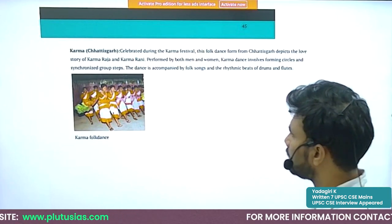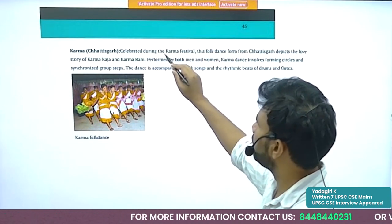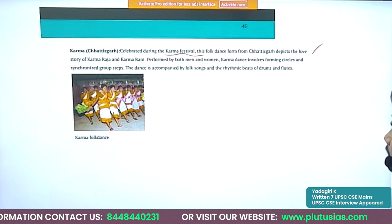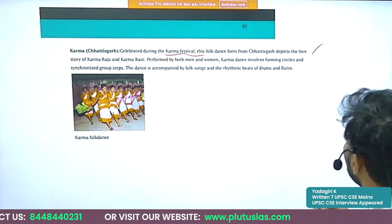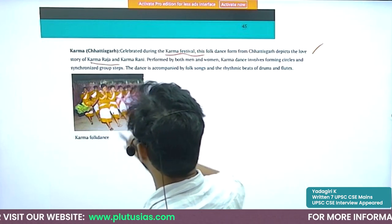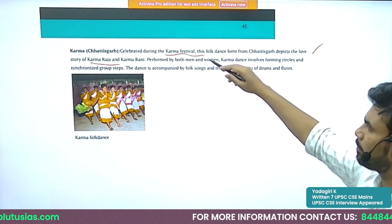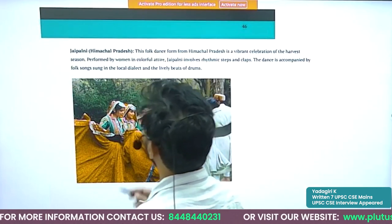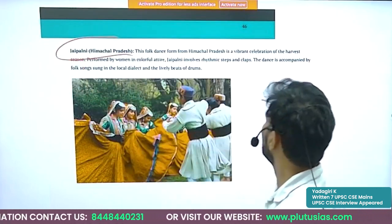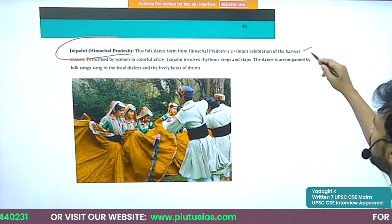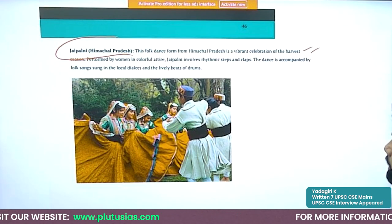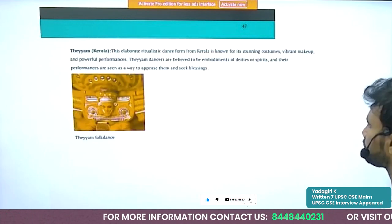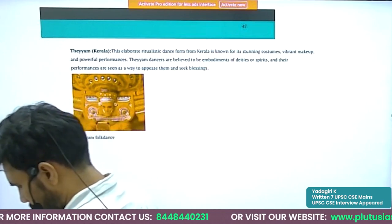Karma dance belongs to Chhattisgarh, celebrated during the Karma festival. It depicts the love story of Karma Raja and Karma Rani, and is performed by both men and women. Japalani belongs to Himachal Pradesh — it is also a celebration of the harvest season. There are plenty of folk dances, and for each one should note the name, associated state, and occasion.